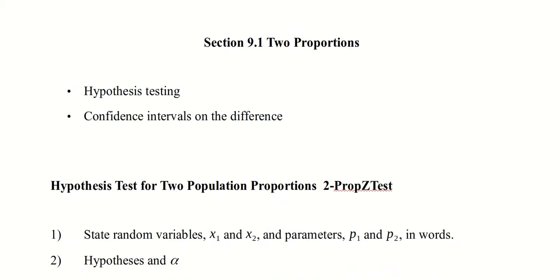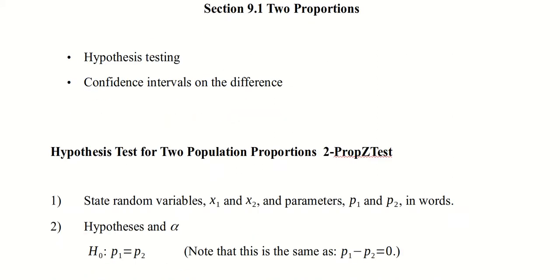In section 9.1, we talk about two proportions. We've been talking about proportions first for quite a while, because we can use our z-tests. For two populations, we're interested in doing hypothesis testing and confidence intervals, and all of this will be on the difference — that is, is one population's proportion bigger, smaller, or the same as another? For hypothesis tests for two population proportions, we're going to find that in our calculator with two-proportion z-tests. Here we'll make sure we've satisfied all the conditions, know what the null and alternative hypotheses are, and how to get those results out of the calculator and interpret them correctly.